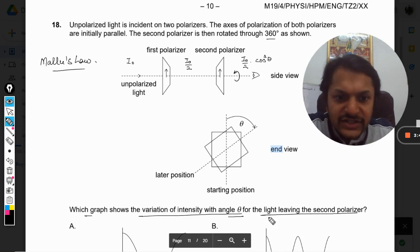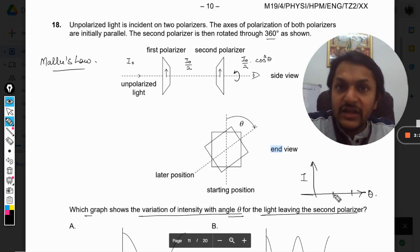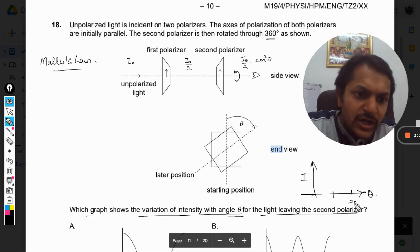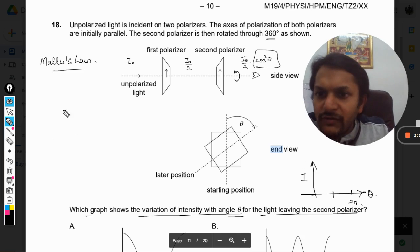The question is that on y-axis you have the intensity and on x-axis you have theta, and you are moving from 0 to 360 degrees, means 2 pi. So obviously the variation will be cos square theta.